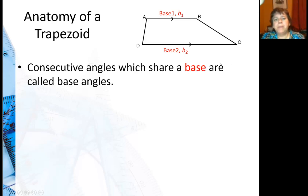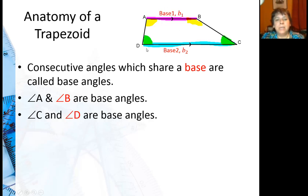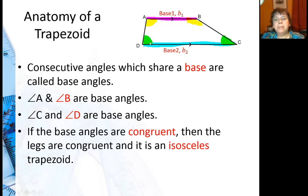Now, another type of angle pair are the base angles. That's two consecutive angles that share a base. So here I've got one base, and the two angles that share it in this case are angle A and angle B. That's a base angle pair. This other base, I have angle C and angle D, so that's another base angle pair. If the base angles are congruent, then that's actually going to make the legs congruent, and it is an isosceles trapezoid.